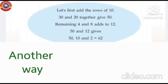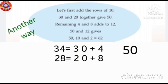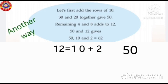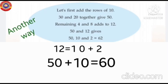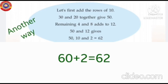Another way. 34 plus 28. Here, 34 means 30 plus 4, 28 means 20 plus 8. First we add tens, that is 30 plus 20, that is equal to 50. Then add 8 and 4, that is 8 plus 4 equal to 12. 12 means 10 plus 2. Already we have 50. 50 plus 10 is equal to 60. 60 plus 2 is equal to 62.